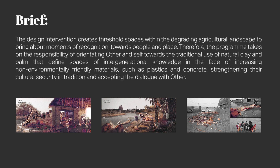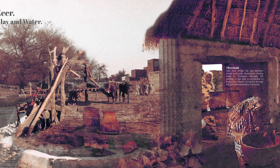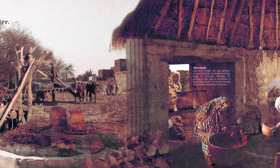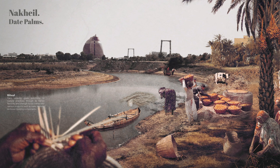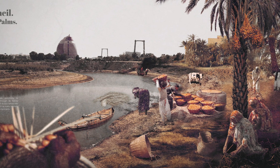Therefore, the programme takes on the responsibility of orientating other and self towards the traditional use of natural clay and palm, defining spaces of intergenerational knowledge in the face of increasing non-environmentally friendly materials such as plastics and concrete, strengthening cultural security and tradition and accepting the dialogue with other. The zeapots occur all over the island and throughout the Nile River Basin, acting as thresholds between public and private. They are used to store drinking water, which also acts as an environmental cooling device. The zeapot is a mnemonic device of generational knowledge that connects the islanders with loved ones not buried on the island. Intergenerational knowledge and symbolism are also embedded within palm-frond craft, where a woven pattern can evoke different meanings depending on colour and weave, adding further cultural identity as a layer over the zeapots.